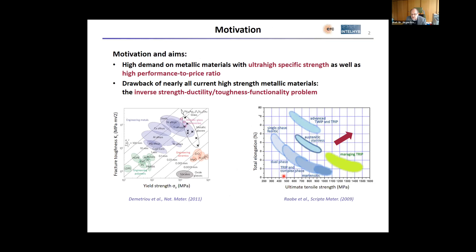The motivation is that if we talk about mechanical properties, you want to have high-performance materials. This could be done with respect to fracture toughness, to strength, to ductility, etc. You typically have Ashby maps that simply tell you for which toughness values you would like to have specific elements. Our background in developing such advanced materials is usually somewhere in the area of metastable materials.